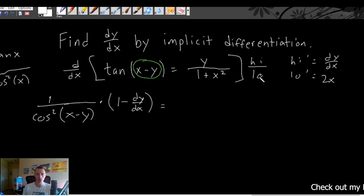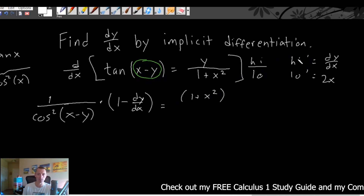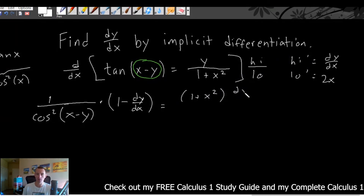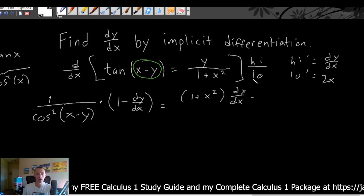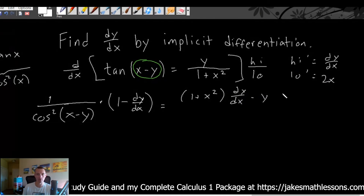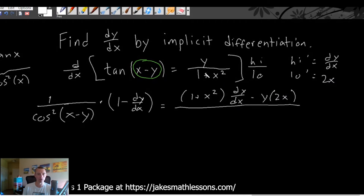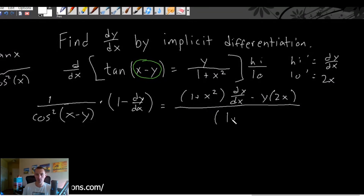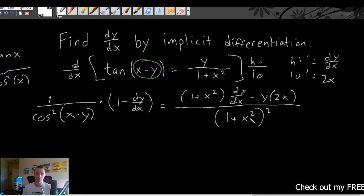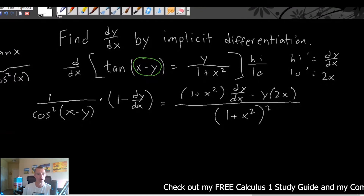So low d-high would be low times the derivative of high — so 1 plus x squared times dy/dx — minus high d-low, which is minus y times the derivative of low, times 2x, all over low squared. So all over 1 plus x squared, all squared. It is very important when you're squaring this denominator to make sure you have it in parentheses, because the squared needs to be applied to both terms and does not distribute — we need to FOIL that out.